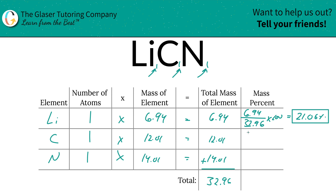Next is carbon. Take the total amount of carbon, 12.01, divided by the total of the entire compound, 32.96. Multiply that by 100, and you get a percentage of roughly 36.44%.